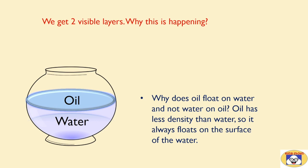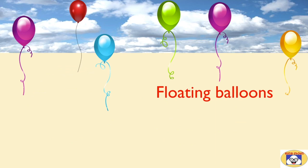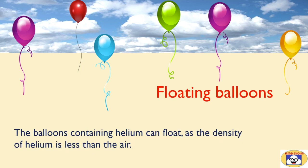Why does oil float on water and not water on oil? The reason is oil has less density than water, so it always floats on the surface of the water. Here is another example: everyone must have seen floating balloons in the sky.